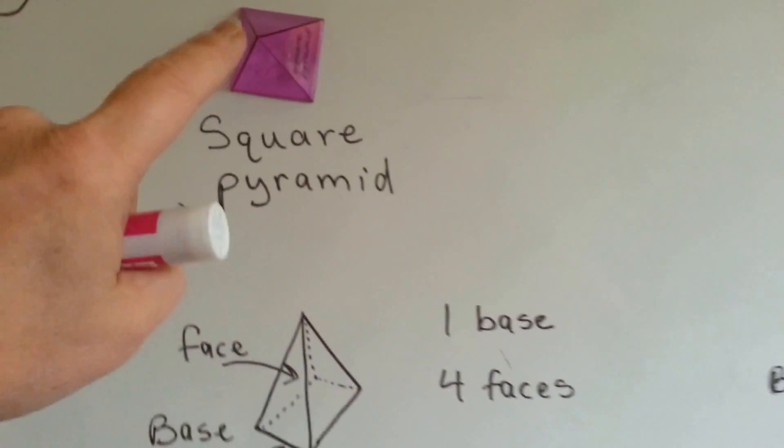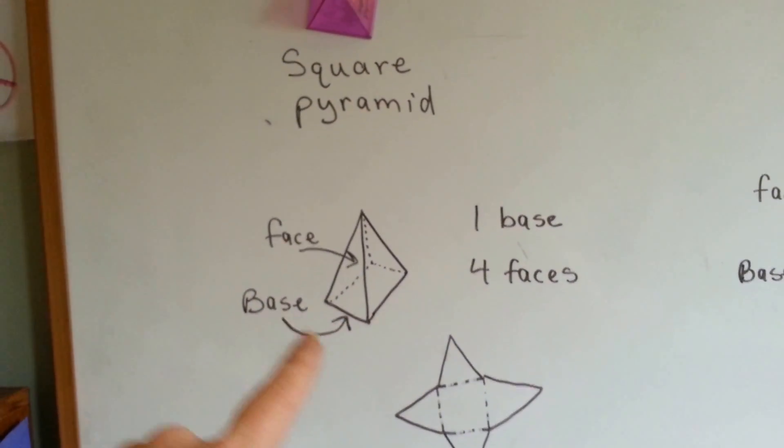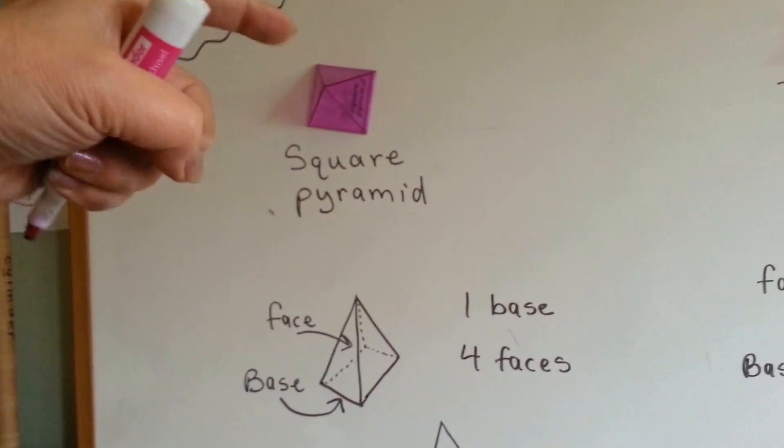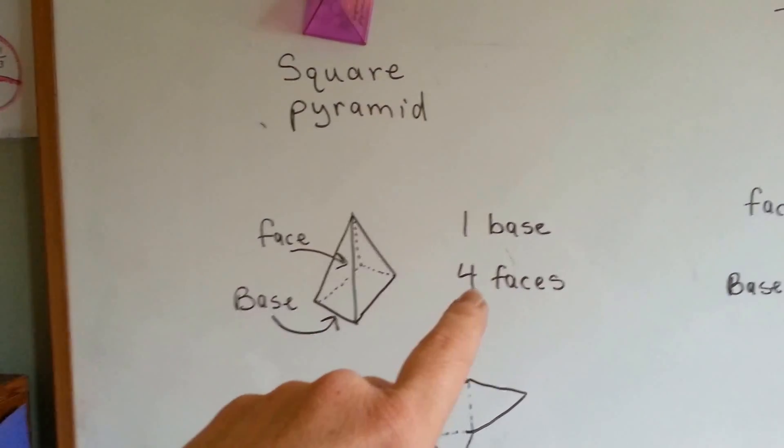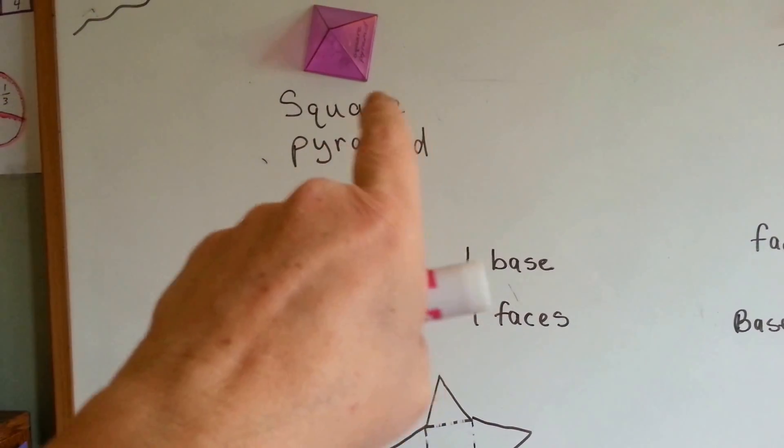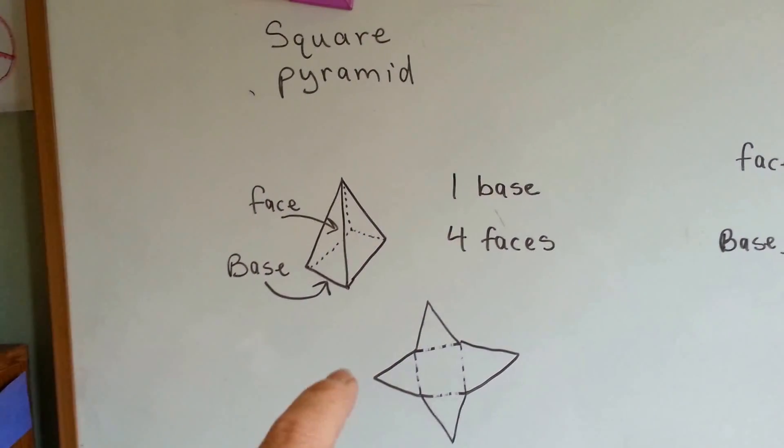So, because the bottom of this one is shaped like a square, it has one base underneath the part that's stuck to my dry erase board. That's the square part. And it has four faces. One, two, three, four. One for each side of the pyramid.